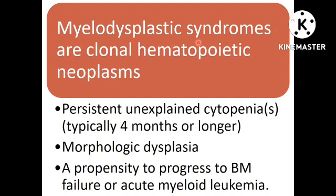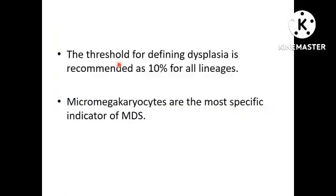Myelodysplastic syndromes are clonal hematopoietic neoplasms characterized by persistent unexplained cytopenia, morphological dysplasia, and the propensity to progress to bone marrow failure or acute myeloid leukemia. The threshold for defining dysplasia remains the same — a 10% cutoff for all lineages. Micromegakaryocytes are the most specific indicator of MDS for the megakaryocytic lineage.